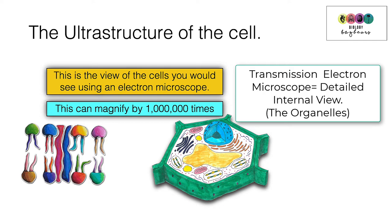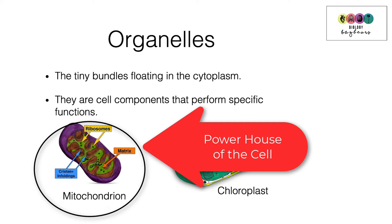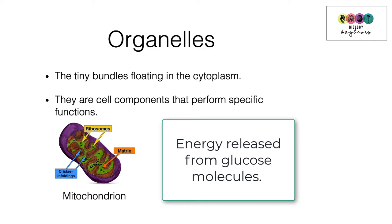When you view cells using an electron microscope, you get to see the organelles — tiny little bundles that appear to be floating in the cytoplasm. They are cell components that perform very specific functions. The mitochondrion, known as the powerhouse of the cell, is where energy is released from glucose molecules to fuel every single reaction in an organism.